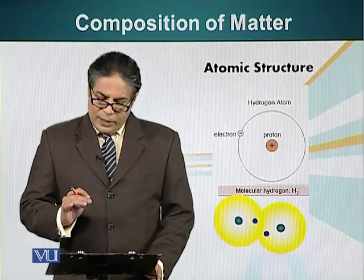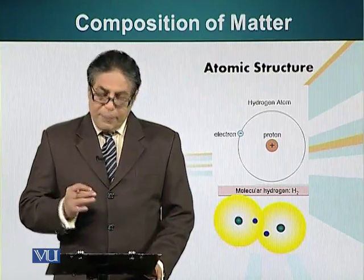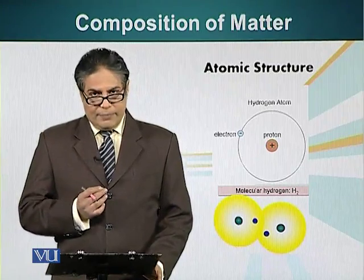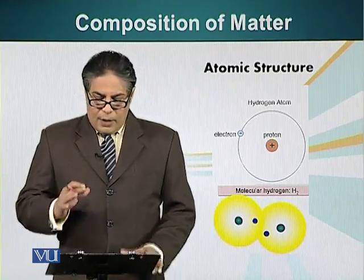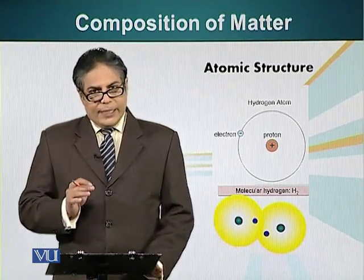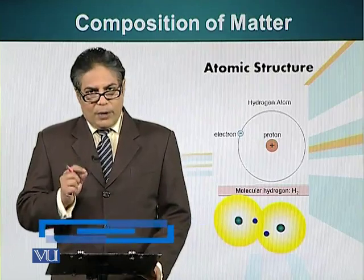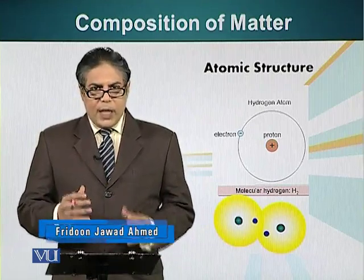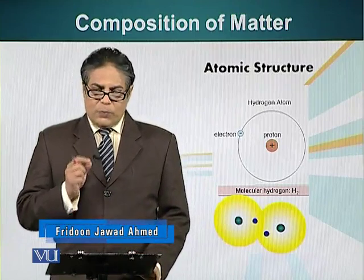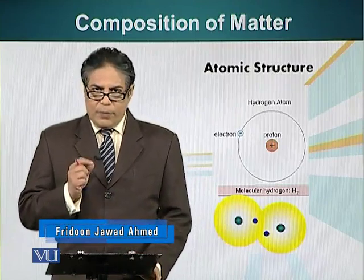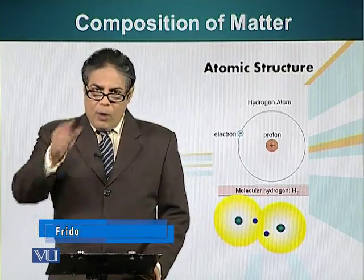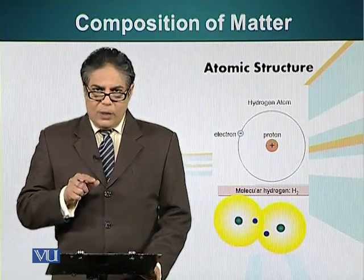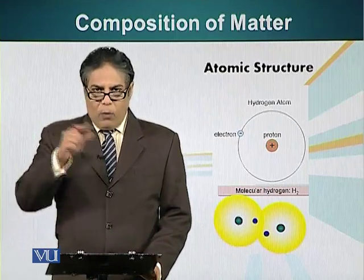We will look at the simplest case scenario of an atom, which is a hydrogen atom. The hydrogen atom has a single positively charged particle at the center, which is called the nucleus. This positively charged particle is called the proton. Around this proton, a negatively charged particle called the electron revolves.